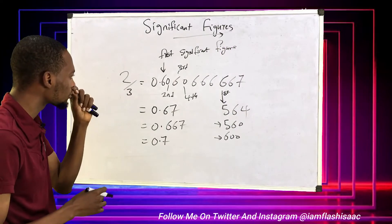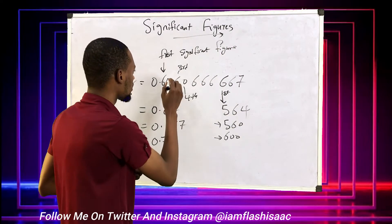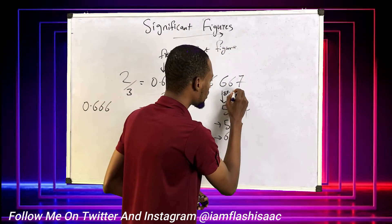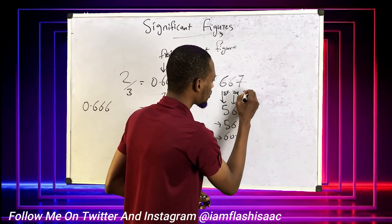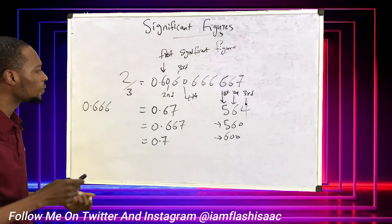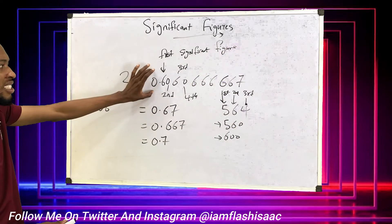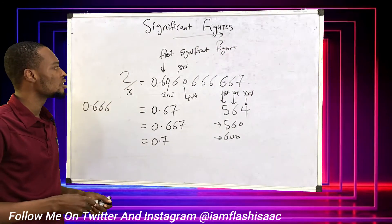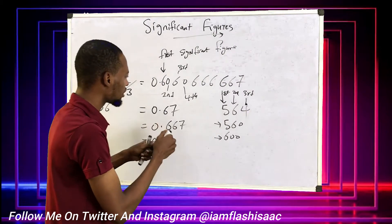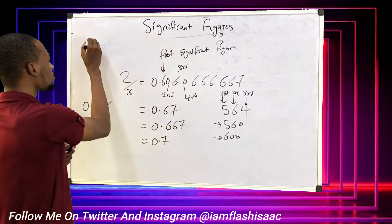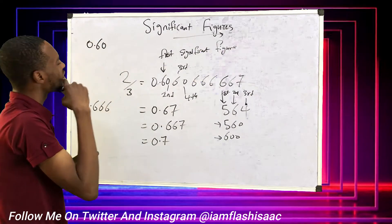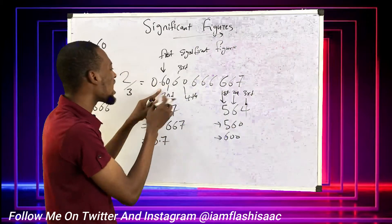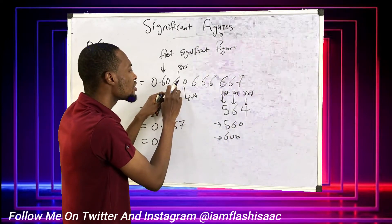If I give you a number like this — look at this first: this is the first significant figure, this is the second, and this is the third. Now, if I give you a question and I say give me this value in two significant figures, this is the second significant figure. The number after the second significant figure is six, which is greater than four.